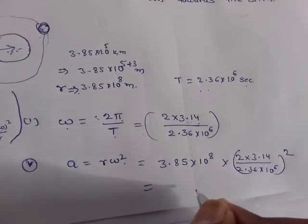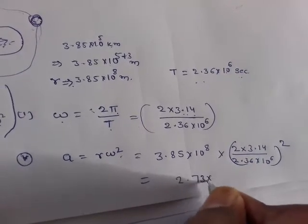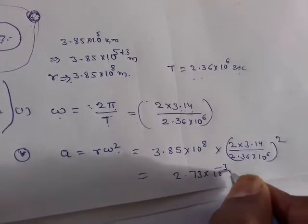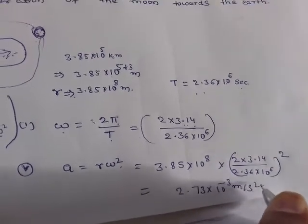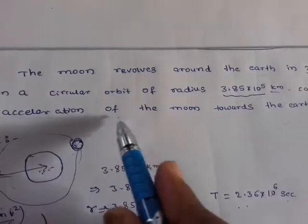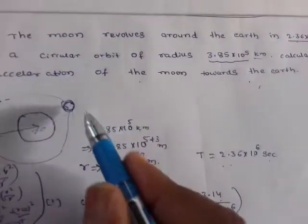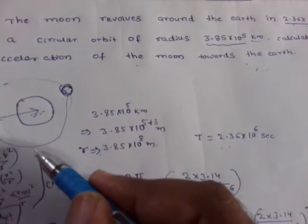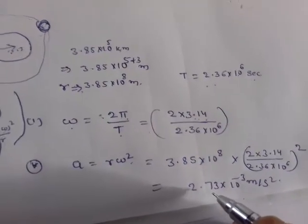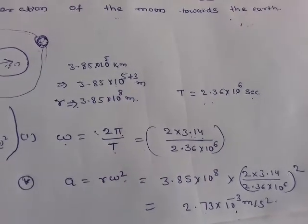After simplifying, the result is 2.73 × 10⁻³ meter per second squared. This is the acceleration of the moon towards the earth: 2.73 × 10⁻³ m/s².